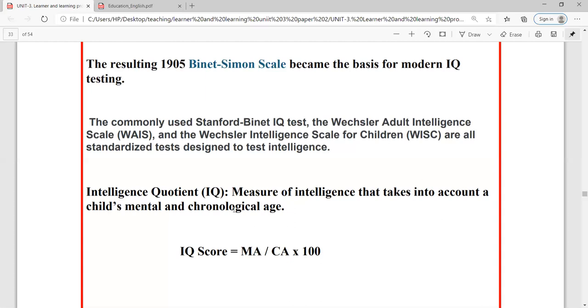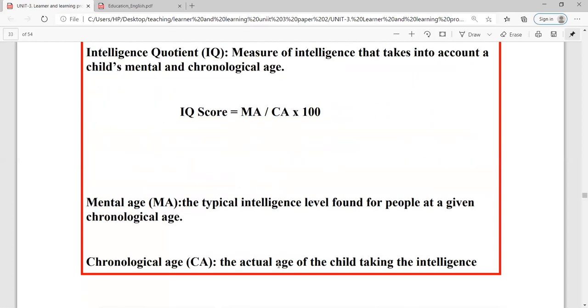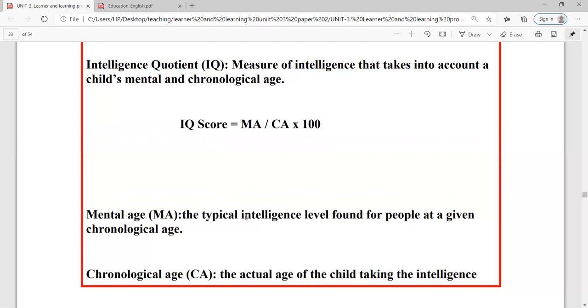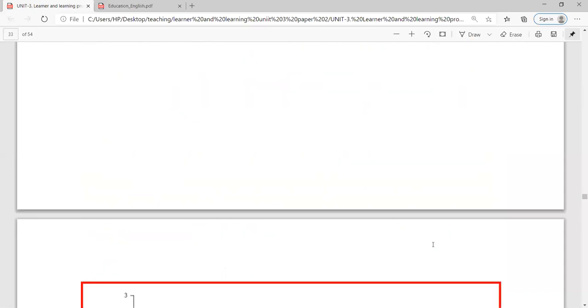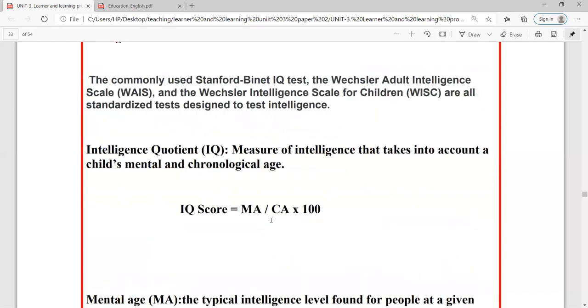The IQ score is found. IQ equals to MA by CA into 100. This is mental age divided by CA, chronological age, multiply with 100. We will multiply with 100. This is the easy way you can find out. Mental age, the typical intelligence level found for people at a given chronological age. If the child has to find intelligence, then you can find it in the easy way. The chronological age is 10, and the mental age is 15, I suppose. So, if we do 15 by 10 into 100, then how much will it be? 150. That means, if the child has the IQ score, it will be 150.